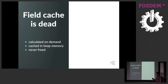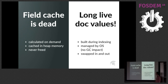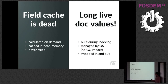Another thing we gained — or rather lost — was field cache. Field cache was a data structure that answered the question: what is the value of a given field across all documents? For example, what is the assignee value across all issues? The problem was twofold: it was calculated on demand by scanning your index, and it was stored on the heap, meaning heap usage increased over time and was never freed. Now this is gone, replaced by doc values — essentially the same mechanism, but built during indexing. When you need it, it's already there on disk; when you don't need it, the OS swaps it out, so there's no GC impact.